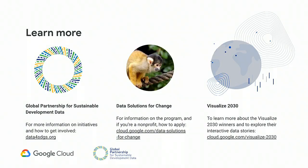There's an opportunity to learn more about our respective organizations and these initiatives. For the Global Partnership for Sustainable Development Data, all the information is available on their website. You're also invited to check out their Twitter account, Data4SDGs, and to subscribe to their newsletter, which provides interesting information and ways to engage not only with the partnership but also with the whole network. For more information on Data Solutions for Change, including nonprofit stories and how nonprofits can apply, visit cloud.google.com/datasolutionsforchange. To learn more about Visualize 2030 and explore the winners' interactive data stories in Google Data Studio, visit cloud.google.com/visualize2030.